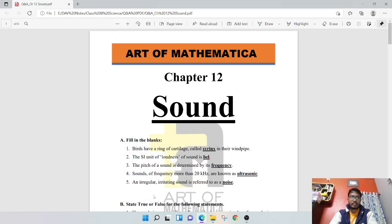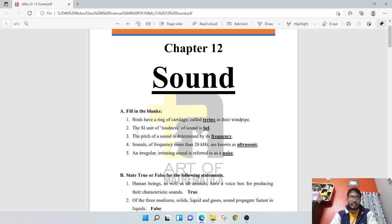Chapter 12 Sound. First question, filling the blanks. Birds have a ring of cartilage called syrinx in their windpipe. The unit of loudness of sound is bel. The pitch of a sound is determined by its frequency. Sound of frequency more than 20 kilohertz is known as ultrasonic sound. An irregular, irritating sound is referred to as noise.